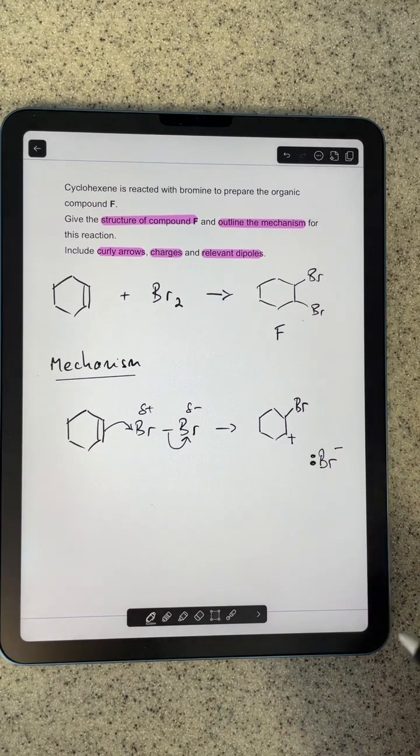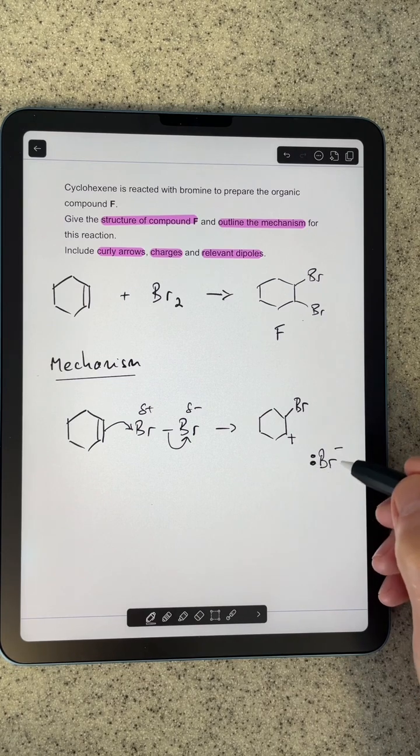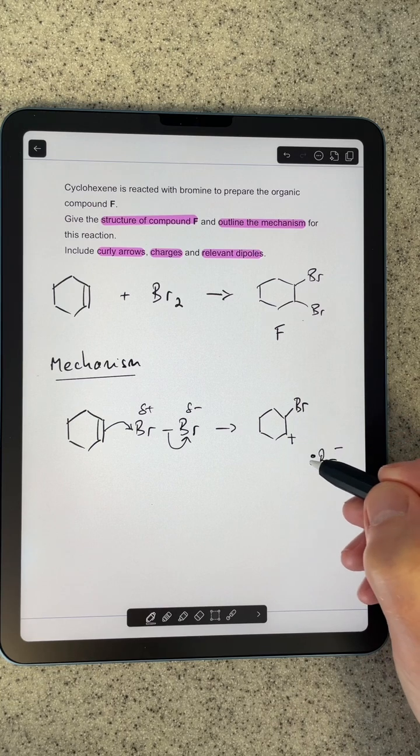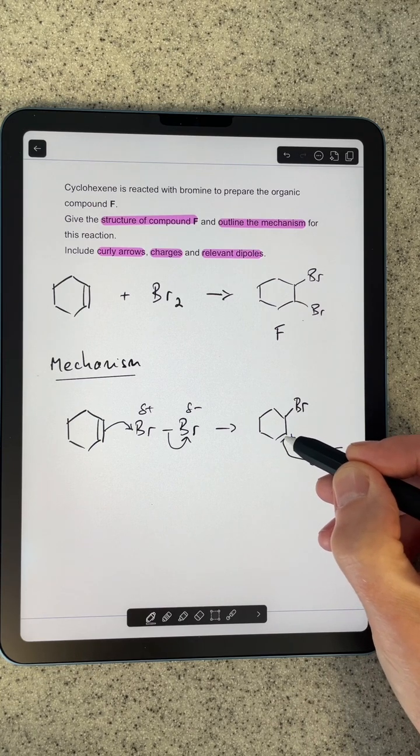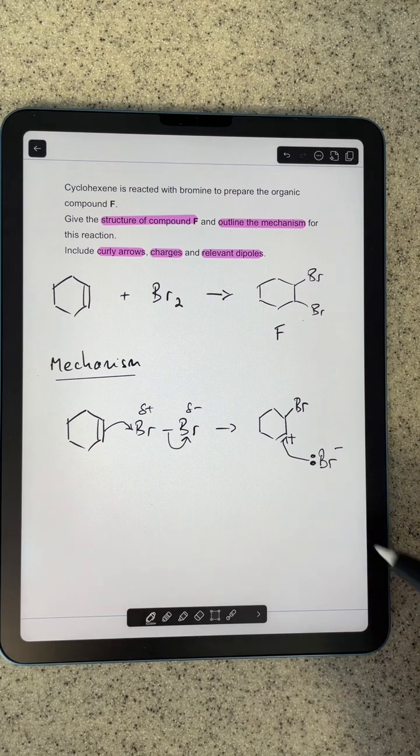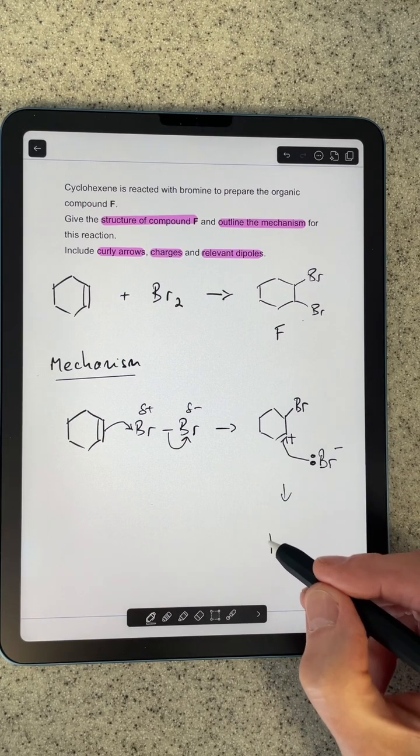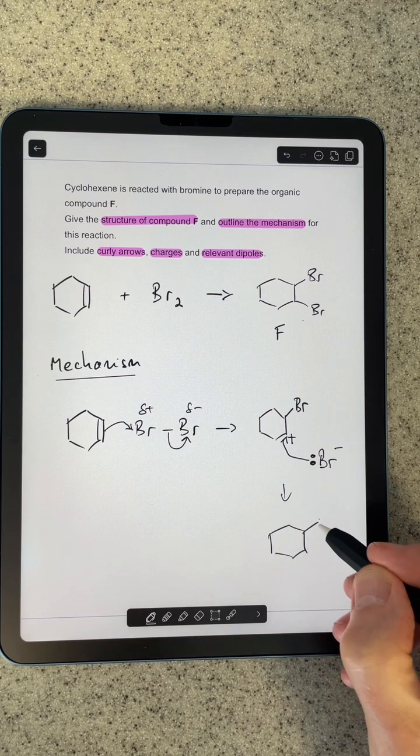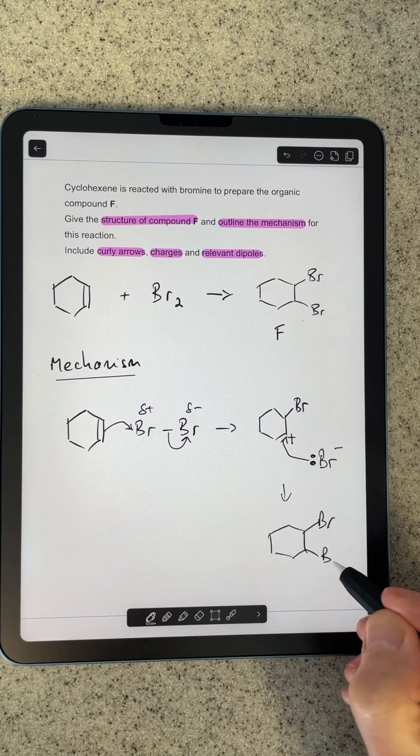Then all we need to do is bond the bromide ion to that positively charged carbon. We do that with a curly arrow, and we're going to make our product, which is that.